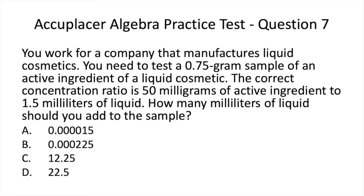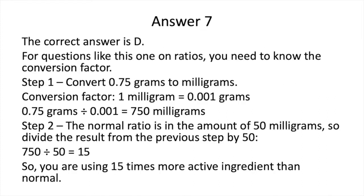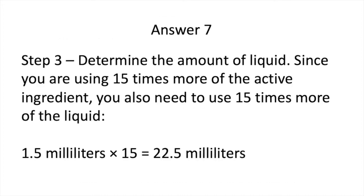Here is Question 7. Now pause to solve. The correct answer is D. For questions like this one on ratios, you need to know the conversion factor. Our conversion factor is that 1 milligram is equal to 0.001 grams. If you're converting milligrams to grams as shown in the conversion factor, you would multiply. However, if you are working the conversion factor backwards — in this case converting grams to milligrams — then we need to divide. Now pause to read the rest of the solution.